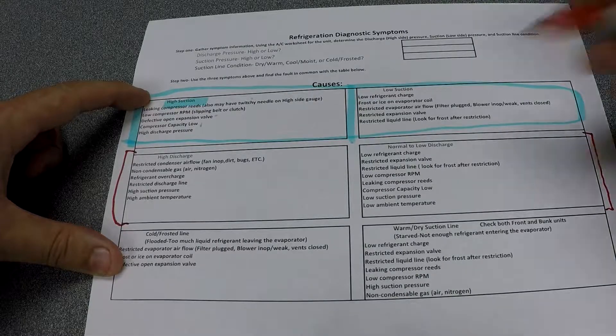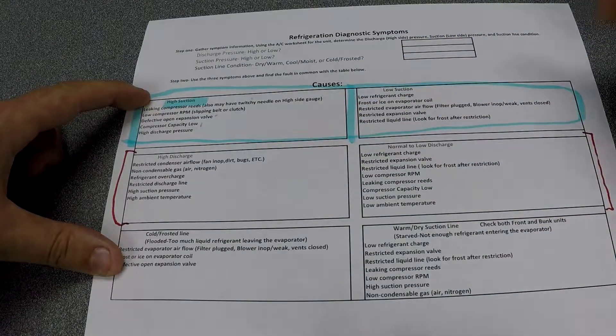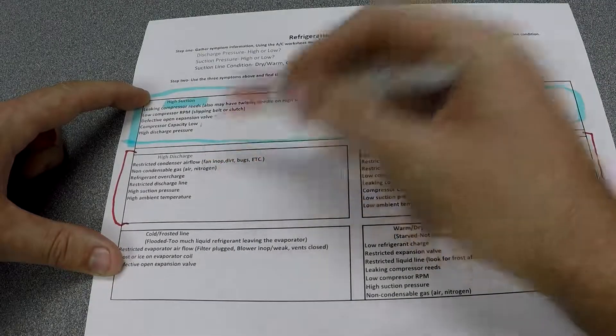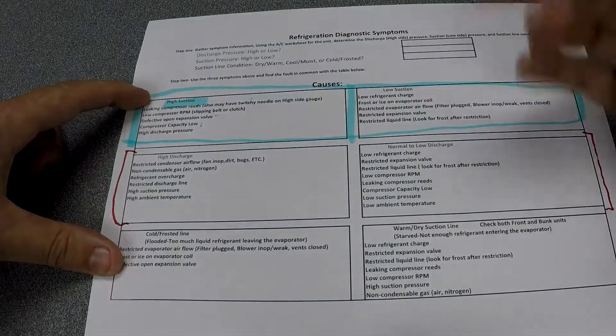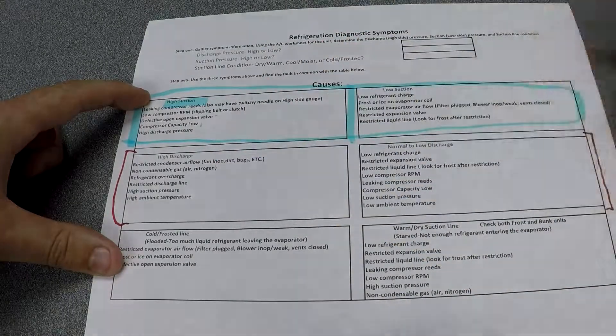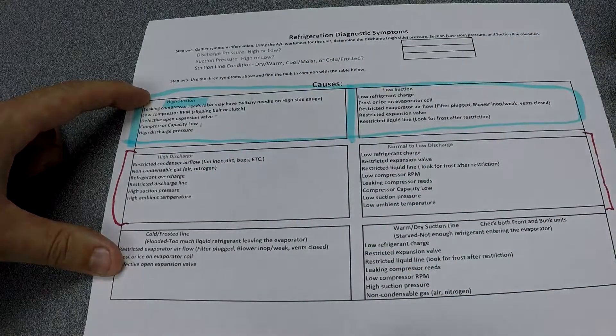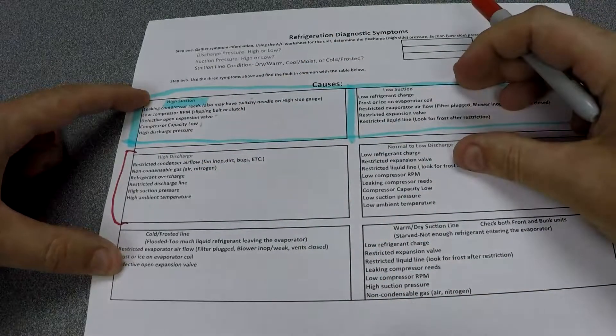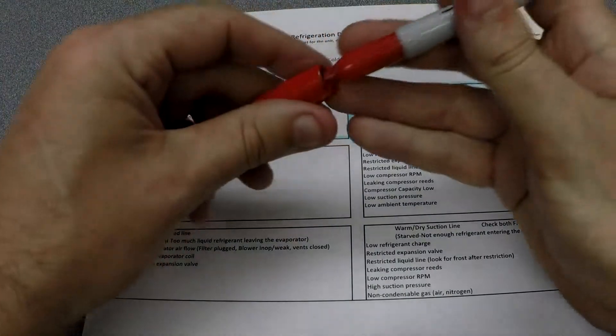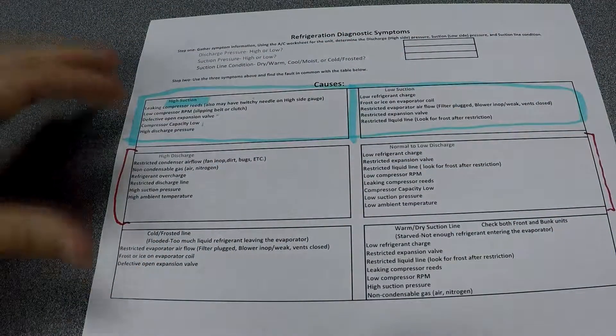I think in the quiz we asked what causes high discharge. So we got restricted condenser airflow, fans not operating, bugs, dirt, NCG, overcharge, restricted discharge line, etc.